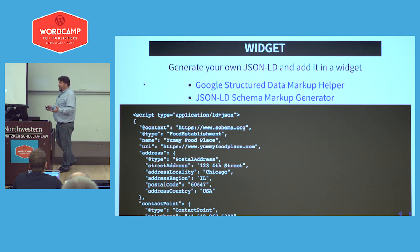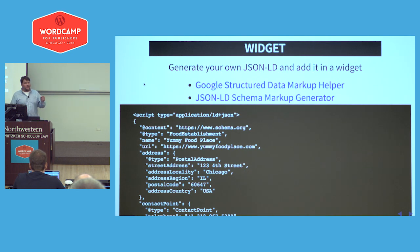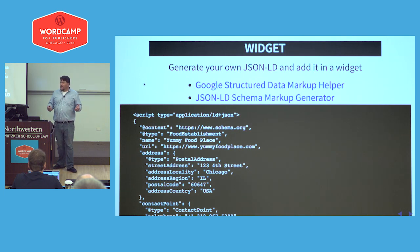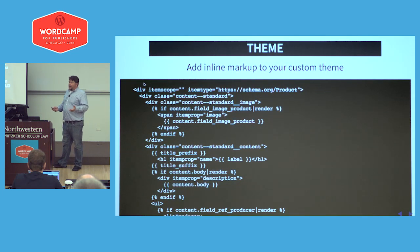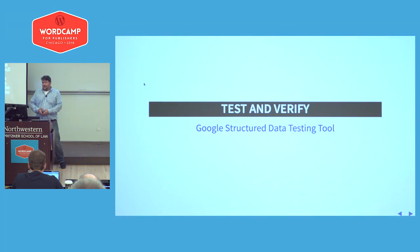Another way — if you're just doing one-off pieces of content, you can generate your own JSON-LD and stick it in a widget. Google has a structured data markup helper, which is a form you fill out, and at the end you get a large chunk of JSON-LD to stick in a widget or your theme. You can also do inline markup in your theme using inline RDFa or itemscope. Once it's all done, Google has a structured data testing tool — there's no guessing if you did it right.